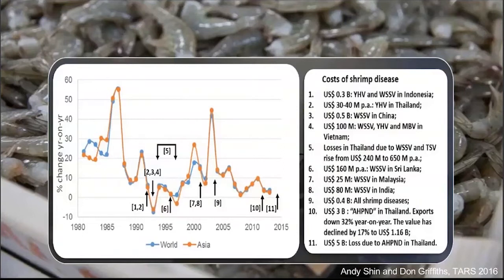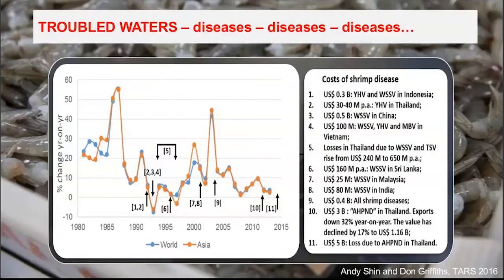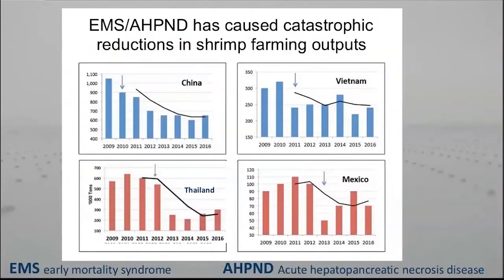Diseases are a big problem. The figures shown here for shrimp diseases indicate we are talking about millions, even up to billions of US dollars lost through diseases. One of the most spectacular ones in recent years was the early mortality syndrome, which was later diagnosed as acute hepatopancreas necrosis disorder or disease, caused by Vibrio parahemolyticus.